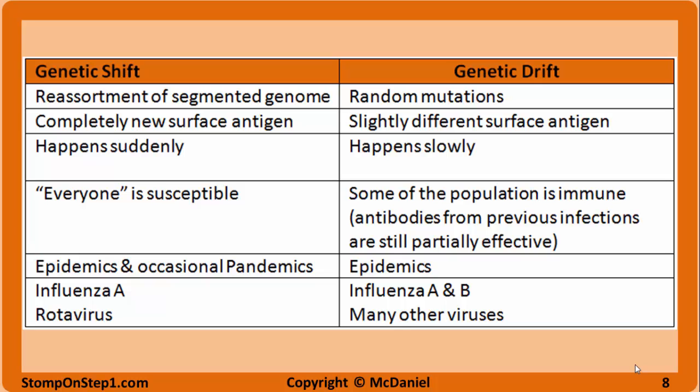Genetic drift is the accumulation of random mutations that slowly leads to a surface antigen that is slightly different than subtypes of the virus that caused the previous year's epidemic. Drift generally doesn't cause pandemics and leads to less serious yearly epidemics, as some individuals in the population remain immune since this new type of the virus looks similar to subtypes present in the population the previous year. Genetic drift is present in influenza A, B, and the rarer type C, as well as many different species of virus.